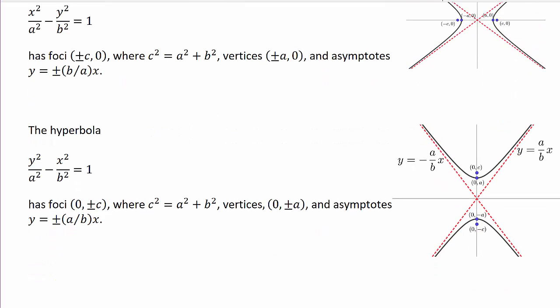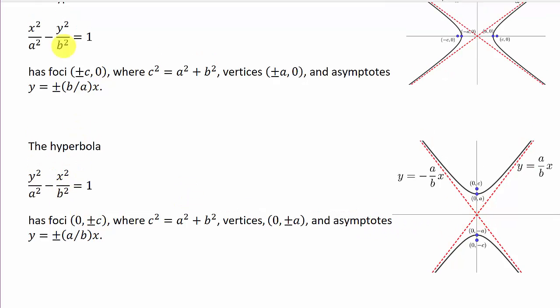This is really the same thing, except notice the difference in this one and this one. We've got the Y squared comes first, Y squared over A squared minus X squared over B squared equals 1. So when that's the case, the hyperbola is going to open up and down.